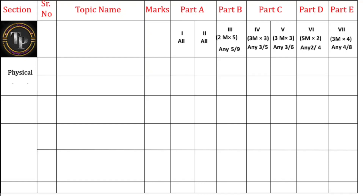For physical chemistry, two chapters are covered in the midterm: Some Basic Concepts of Chemistry and Structure of Atom. From physical chemistry overall you will get 56 marks. From the Basic Concepts of Chemistry chapter, you will get 27 marks total — four MCQs (question numbers 1 to 4), one fill in the blank (question 16), and two two-mark questions (questions 21 and 22).